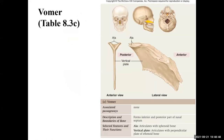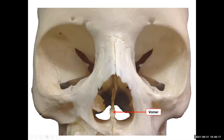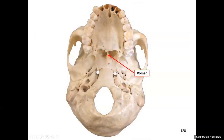The vomer is one of two bones that make up the bony nasal septum. It forms the inferior portion of the bony nasal septum, visible from the anterior view, and the inferior-posterior portion visible on the sagittal view. You can also see it from the inferior view of the skull.